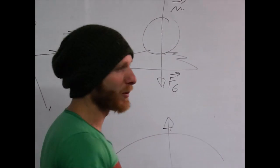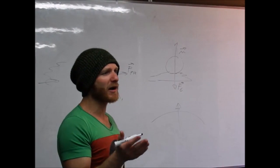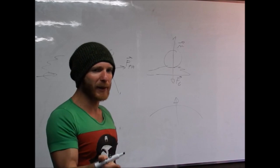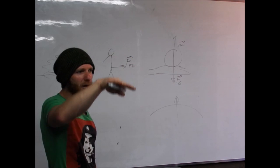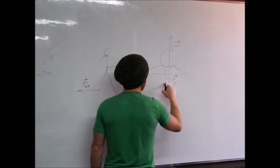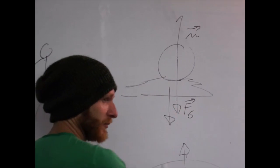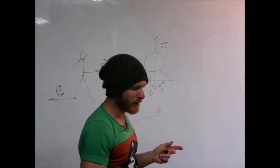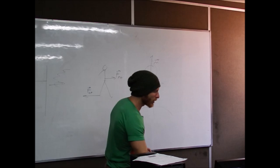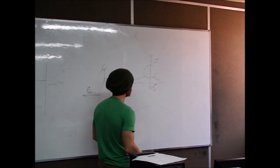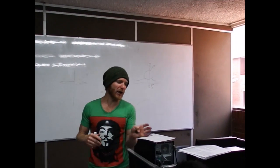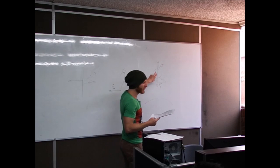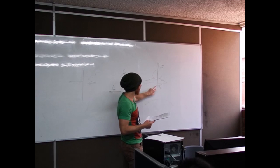¿Cuál es la reacción a la fuerza normal? La fuerza normal es la fuerza de la mano sobre la pelota. La reacción es la fuerza de la pelota sobre la mano. La mano empuja la pelota hacia arriba; la pelota empuja la mano hacia abajo. Acción y reacción siempre actúan sobre cuerpos diferentes. Cuando dibujemos el diagrama del cuerpo libre, nunca se dibuja la reacción; solo se dibujan las acciones, porque estamos interesados solamente en las fuerzas sobre este objeto.